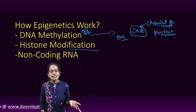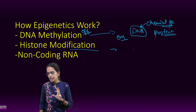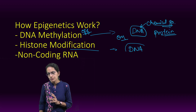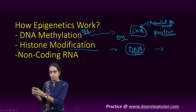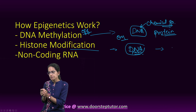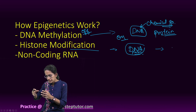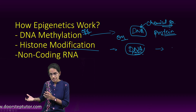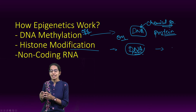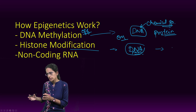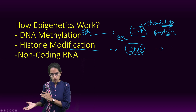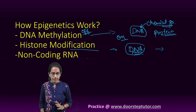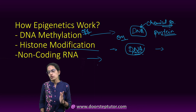The next mechanism is histone modification. The DNA wraps around a protein called a histone. When the histones are tightly packed, you cannot read the gene — genes cannot access the DNA easily. A modification in the histone therefore acts as a turning signal for the gene, switching it on or off.